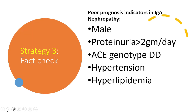Coming to the last and final strategy, which is fact check. MRCP is a concept-based exam — 80% of your questions are concept-based, where you arrive at the correct diagnosis by thoroughly reading the question stem, analyzing the given scenario, and eliminating wrong options. However, 20% of your questions will be fact-based, and it is important to go through question banks to identify the commonly asked fact-based areas from the MRCP syllabus. I have given a few examples in this video, but again this is not an exhaustive list.